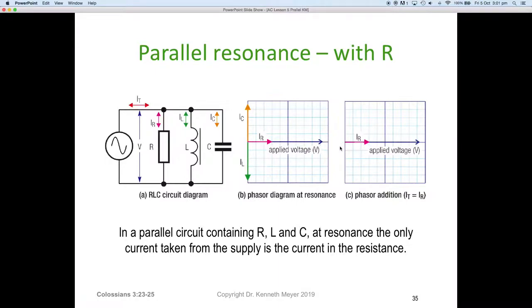The two currents, the current in the capacitor and the current in the inductor, cancel each other out and there is no current flowing in either component. So in a parallel circuit containing R, L and C at resonance, only current taken from the supply is the current in the resistance.